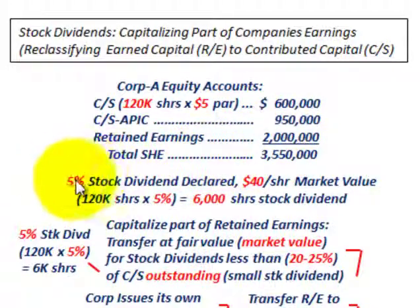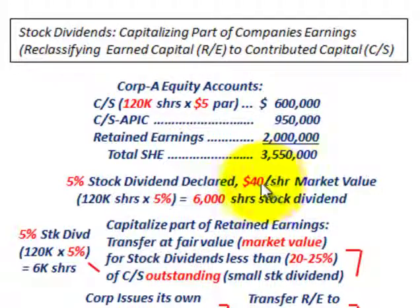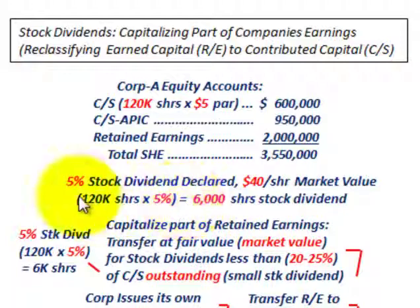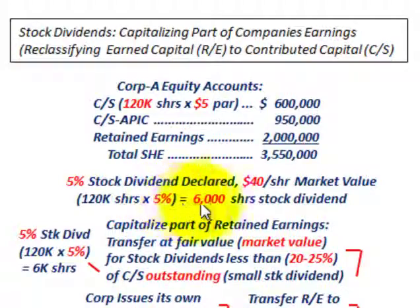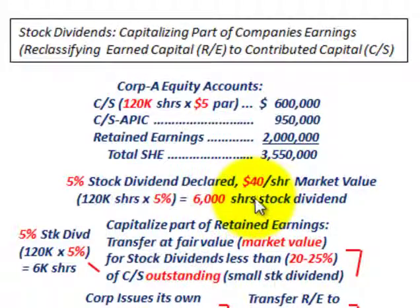For our example, there's going to be a 5% stock dividend declared. At the time of declaration, the stock price for common stock is $40 per share — that's its market value or fair value. With 120,000 shares outstanding at a 5% stock dividend, that equals 6,000 shares of stock dividend to be distributed to shareholders on a pro-rata basis.